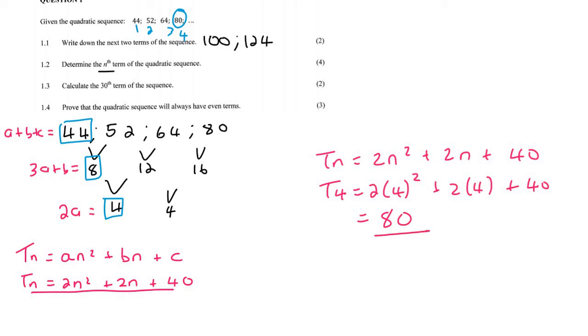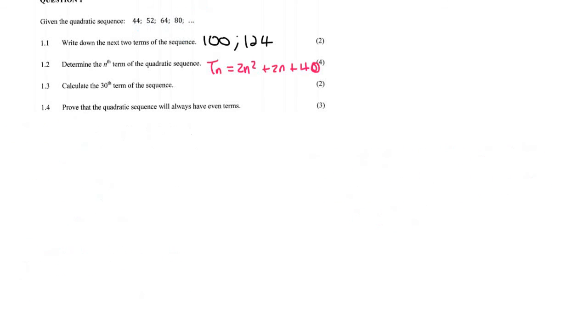This gives me the confidence to know that I have done this correctly. Because sometimes you can make a very little mistake in the exam, and by doing this quickly, you can quickly see if you've maybe made a small mistake. Number 1.3, calculate term 30. So term 30, that's easy, you just plug in 30, and then you work it out. And that should be 1,900.